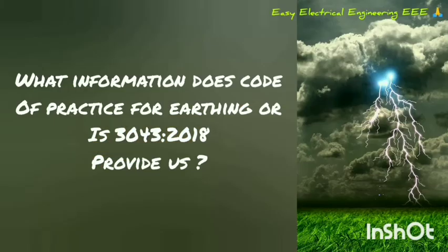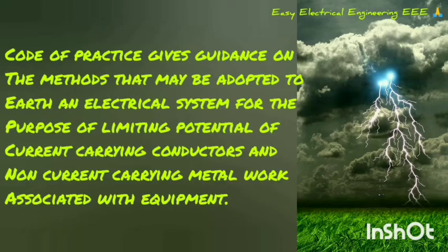What information does Code of Practice IS 3043 provide us? Code of Practice gives guidance on the method that may be adopted to earth an electrical system for the purpose of limiting potential of current carrying conductors and non-current carrying metal work associated with equipment.